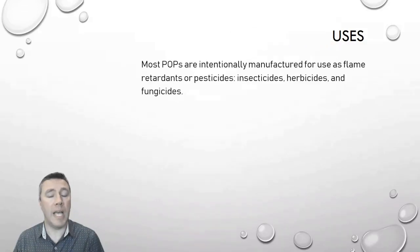But the ones we're most concerned about are the ones that are intentionally manufactured. Persistent organic pollutants are used as flame retardants and oftentimes as pesticides.